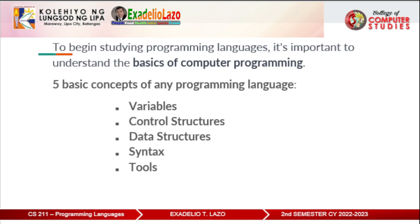Variables is a storage location and an associated symbolic name which contains some known or unknown quantity of information called a value. Control structures is a block of programming that analyzes variables and chooses a direction in which to go based on given parameters.